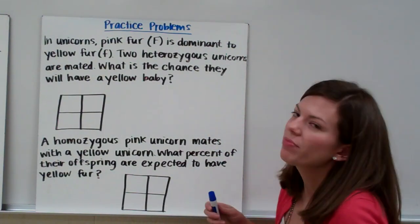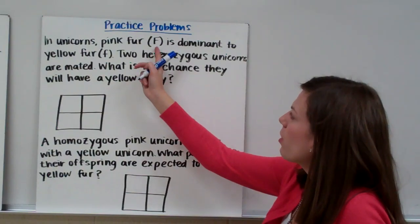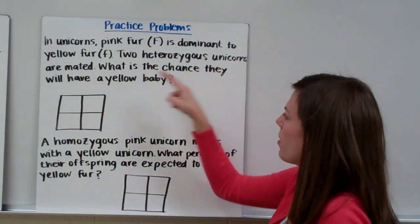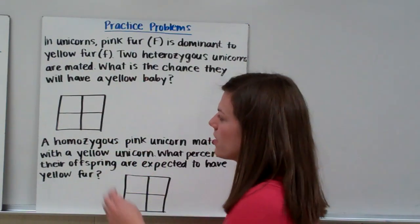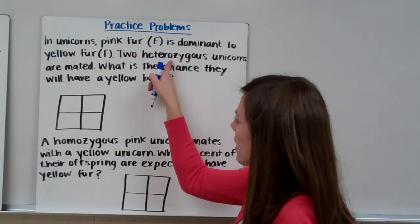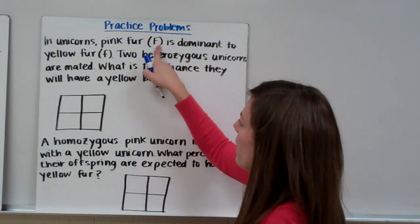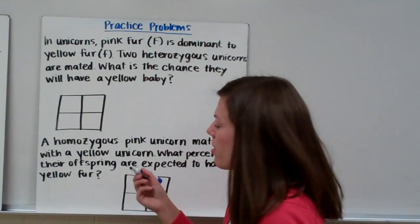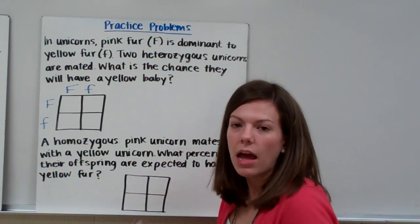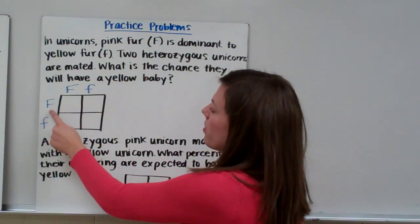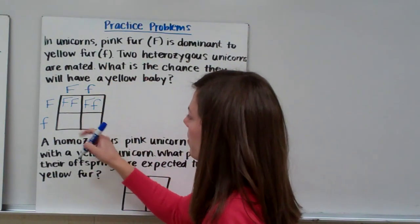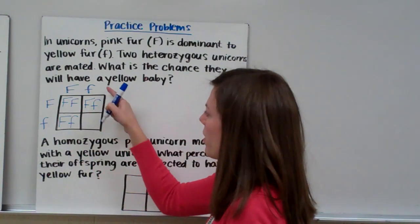Now let's do some practice problems with imaginary creatures. In unicorns, pink fur represented by big F is dominant to yellow fur, little f. Two heterozygous unicorns are mated — what is the chance they will have a yellow baby? Both mom and dad are heterozygous, so each has a big F and a little f. Filling out the Punnett square: big F big F, big F little f, big F little f, and little f little f.